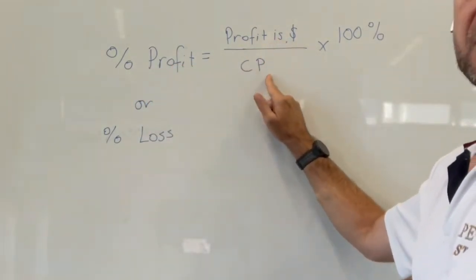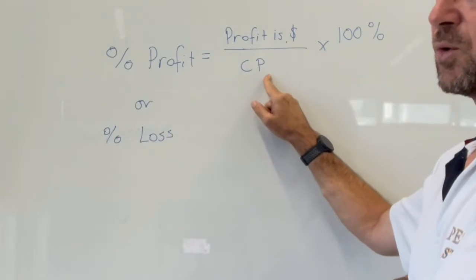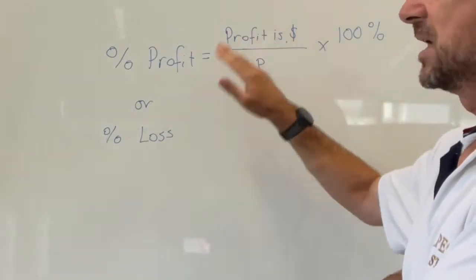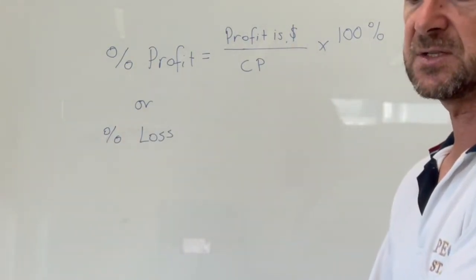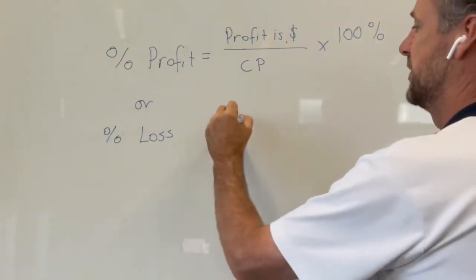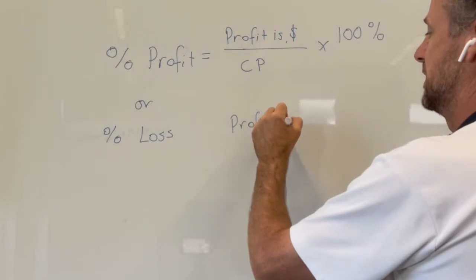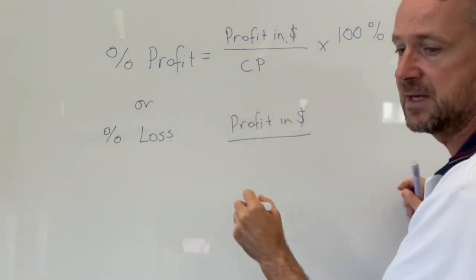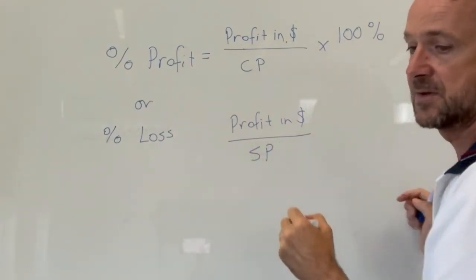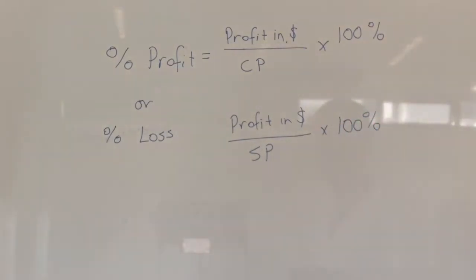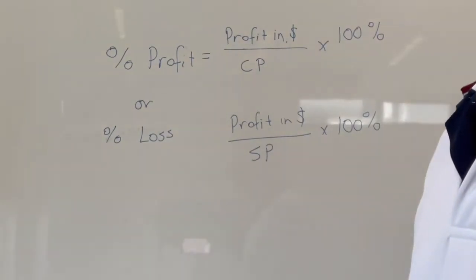You can interchange profit or loss into those equations. The other way is to look at it as the profit in dollars over the selling price, and then multiply by 100%. Those are the formulas we're going to use — we'll look at some examples now.